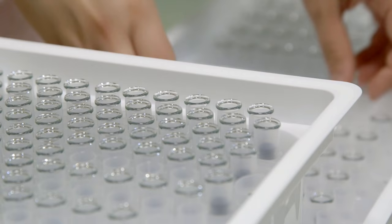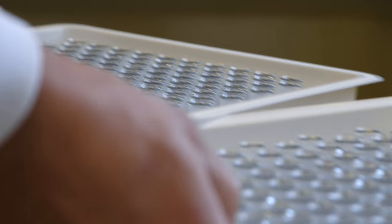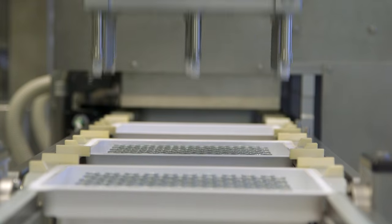In the second stage, we harvest the allantoic fluid from the eggs. This allantoic fluid contains millions and millions of copies of influenza virus.